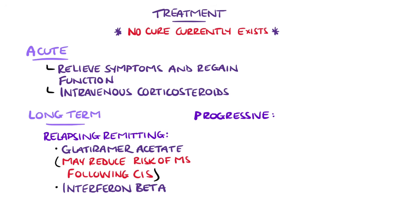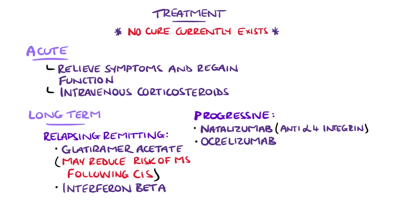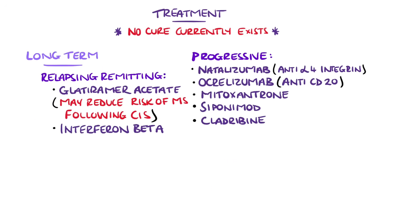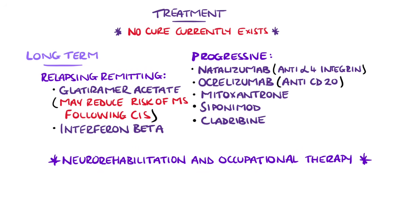Other agents are first-line in progressive MS but may also be used in some relapsing cases. These include natalizumab, a monoclonal antibody that inhibits adhesion of leukocytes to vascular endothelial cells and so reduces immune cells entering the CNS; ocrelizumab, an anti-CD20 monoclonal antibody; mitoxantrone, a chemotherapeutic immunomodulatory agent; siponimod; and cladribine. In addition to pharmacotherapy, rehabilitation such as neurorehabilitation and occupational therapy play a key role in MS to help restore and preserve function.